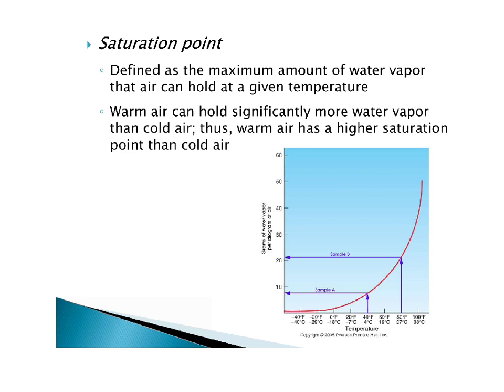Saturation point is the second property of air that causes air to move. It is the maximum amount of water vapor that air can hold at a given temperature. Looking at this graph, it's actually exponential — it looks like a J curve. Warm air can hold significantly more water vapor than cold air. The greater the temperature, the greater its ability to hold moisture — warm air has a higher saturation point than cold air. This is why the tropics tend to be both warm and humid: warm air holds a lot more water vapor.